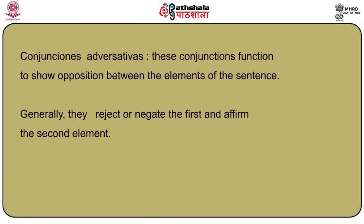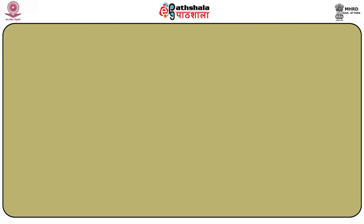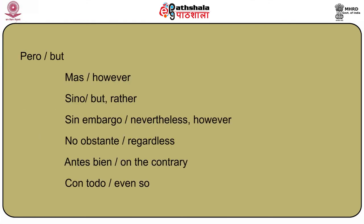Next set of conjunctions are conjunciones adversativas. These conjunctions function to show opposition between the elements of the sentence. Generally they reject or negate the first and favour the second element. These are: pero (but), mas (however), sino (but/rather), sin embargo (nevertheless/however), no obstante (regardless), antes bien (on the contrary), con todo (even so), más bien (rather), fuera de (apart from), excepto (except), salvo (except), menos (but), más que (even if/however much).